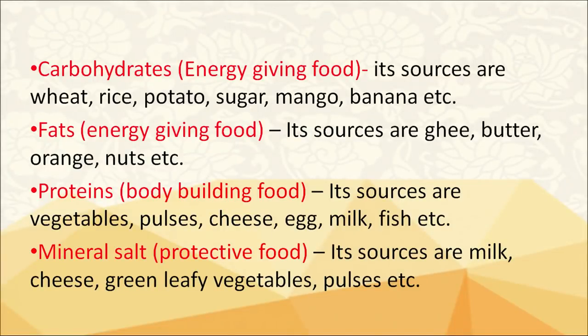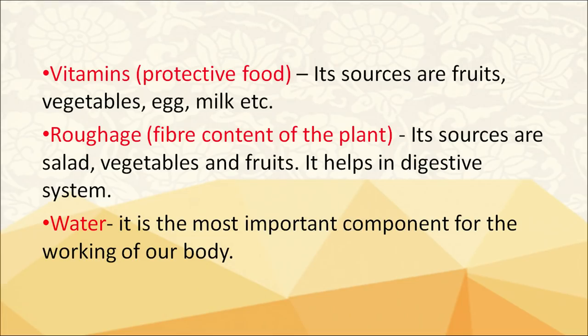Examples of nutrients: Carbohydrates are energy-giving food; sources include wheat, rice, potato, sugar, mango and banana. Fats: sources include ghee, butter, nuts, etc. Proteins: sources include vegetables, pulses, cheese, egg, milk and fish. Mineral salts: sources include milk, cheese, green leafy vegetables and pulses. Vitamins: sources include fruits, vegetables, egg and milk. Roughage is obtained from salad, vegetables and fruits, and helps in the digestive system. Water is also a very important nutrient which the body needs for its functioning.